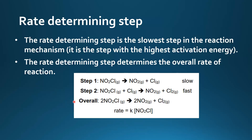Here's an example. Here's the overall equation, and it has two elementary steps: step 1 and step 2. Step 1 is the slow step and step 2 is the fast step. So the rate determining step is the slowest step in the reaction mechanism, which is step 1.